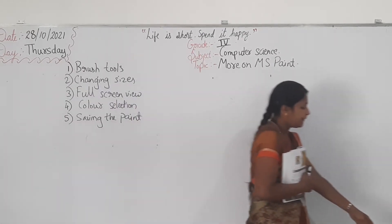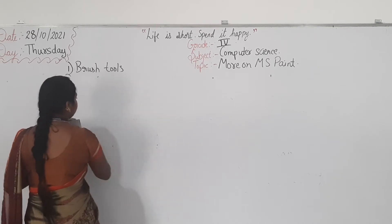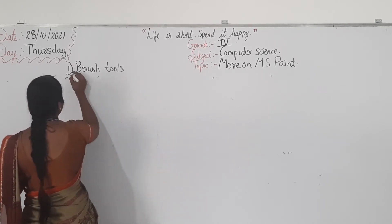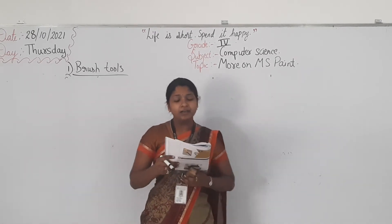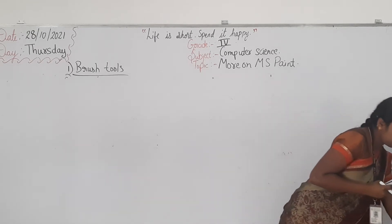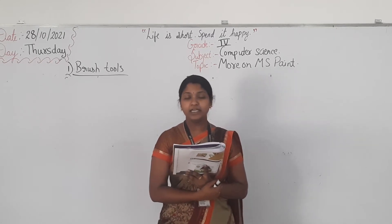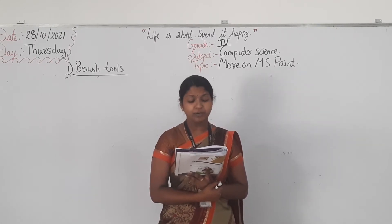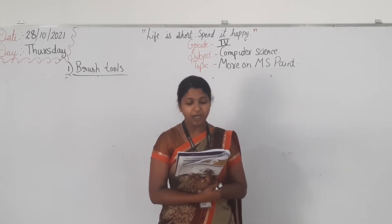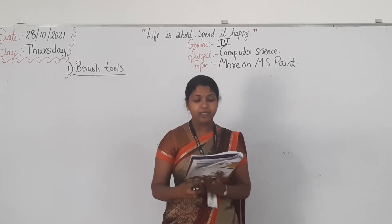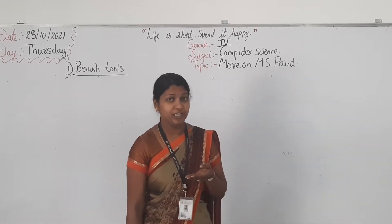The first feature is brush tool. See page number 41. There are various kinds of brushes that a user can use to make the painting more creative and fun. The different types of brushes are: oil brush, crayon, watercolor brush, marker, natural pencil, and airbrush. The brush tool is the main thing we need for painting.